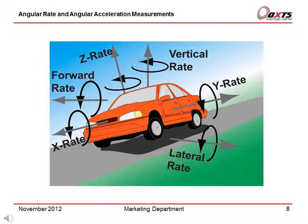Now we shall look at the angular rate and angular acceleration measurements of the RT. The angular rates and angular accelerations of the vehicle can be measured about the body axis or the level axis. The rates are as follows: roll rate equals x rate, pitch rate equals lateral rate, and yaw rate equals the down rate. The angular accelerations are in the same directions as the angular rates.